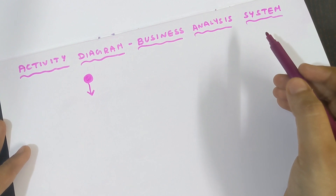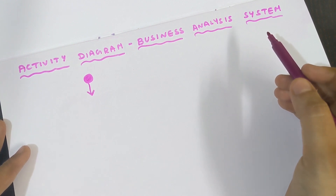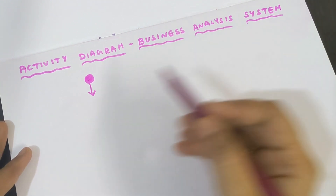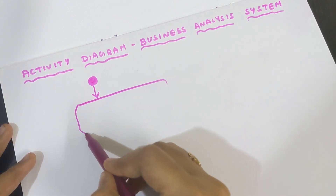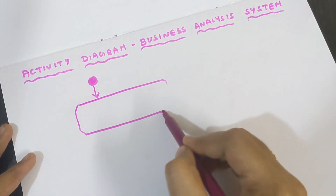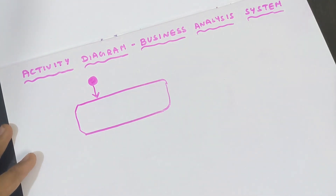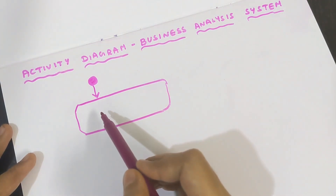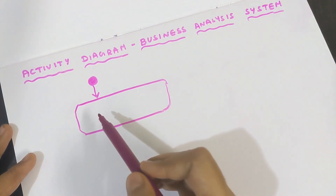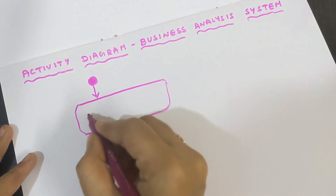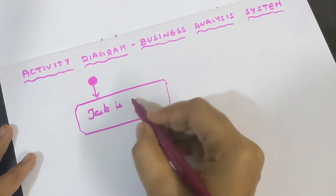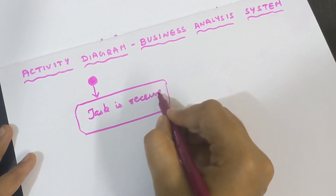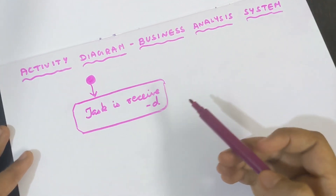The symbol for activity is a rectangle with rounded corners. I am drawing this symbol. Inside this, I need to write the activity that takes place. So the first activity is: task is received.